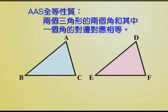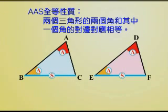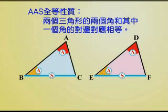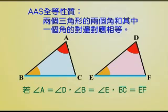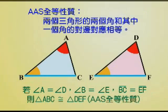另外的AAS全等性质就是说：两个三角形的两个角和其中一个角的对边对应相等时，那么这两个三角形就会全等，这称为AAS全等性质。而其实AAS与SAA同意，一般而言我们习惯用的是AAS。也就是说在三角形ABC和三角形DEF中，角A等于角D，角B等于角E，线段BC等于线段EF，这两个三角形就会全等，我们称为AAS全等性质。